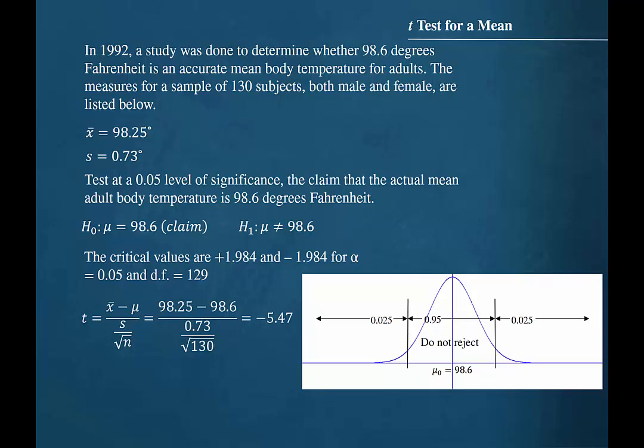That would leave 95% of the sampling distribution between the critical values. And therefore, it would be very unlikely that our randomly drawn sample would lead us to reject the null hypothesis if the population mean is indeed 98.6. But our calculated t-test value was minus 5.47.